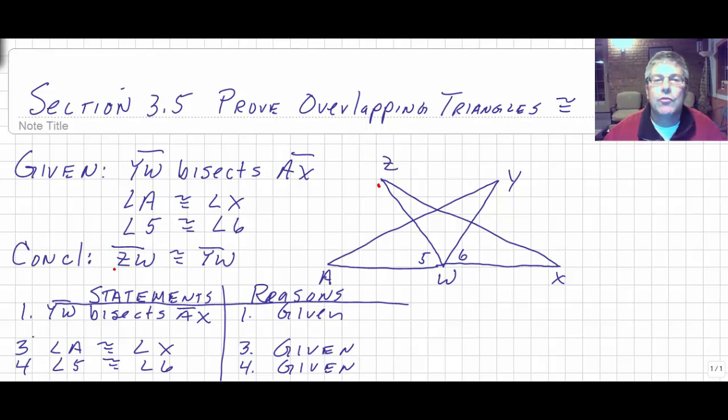Our goal is going to be to prove segment ZW congruent to segment YW. So looking at this, there are a variety of triangles, but it should be fairly obvious that we are going to want to prove triangle ZWX. So this triangle that I'm outlining in red, congruent to the overlapping triangle YWA. So we're going to want to get the blue triangle congruent to the red overlapping triangle.